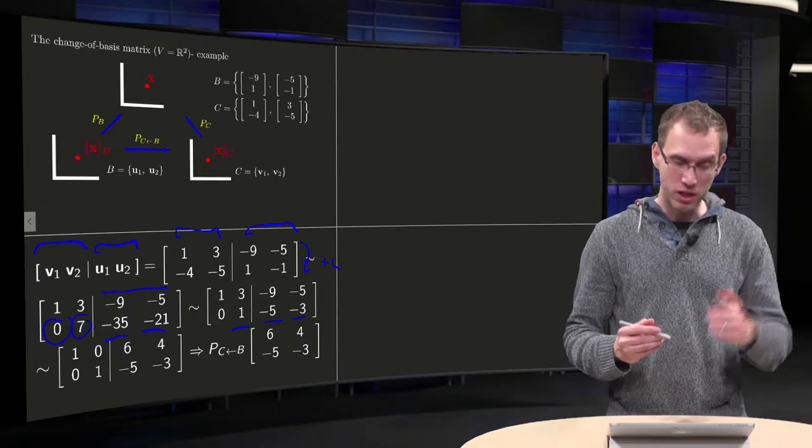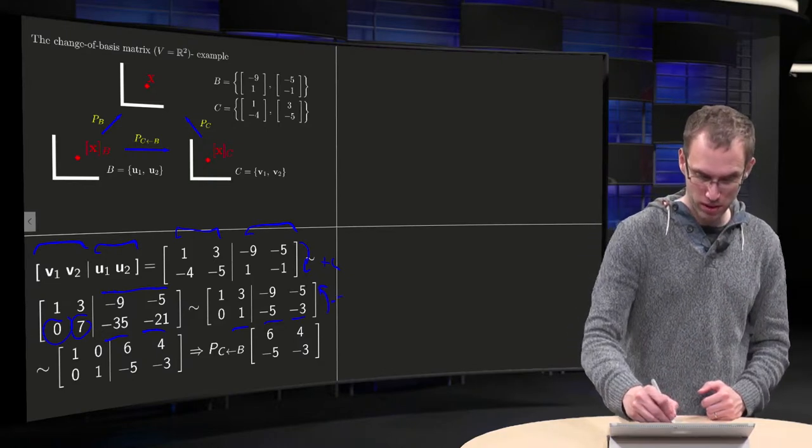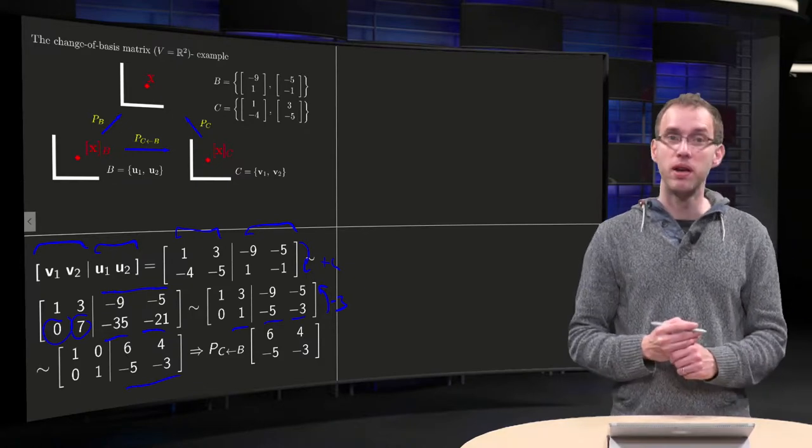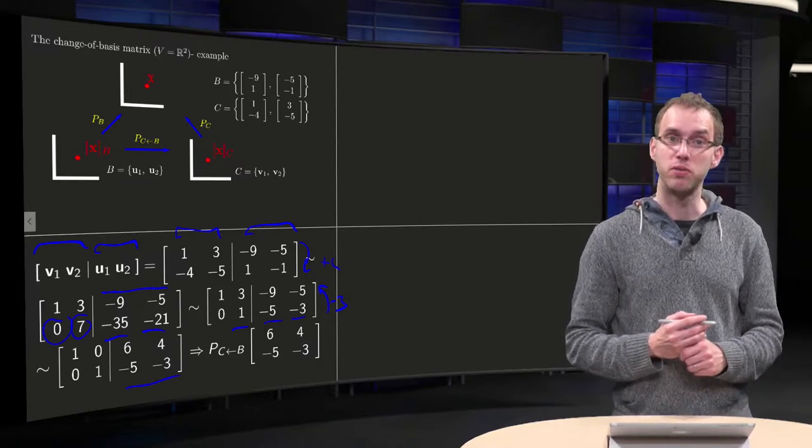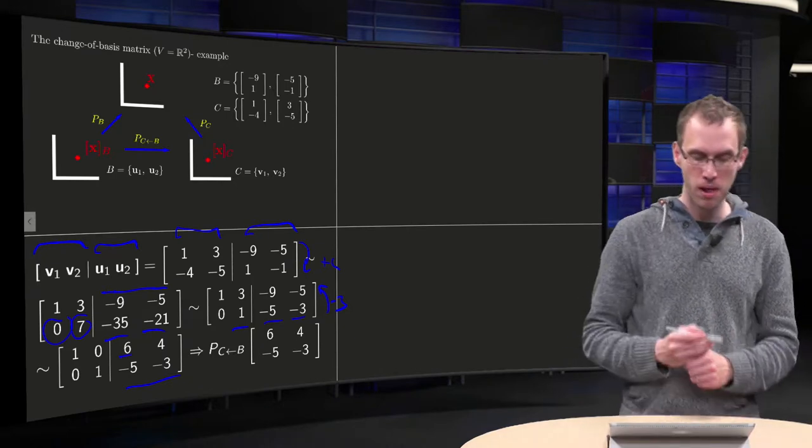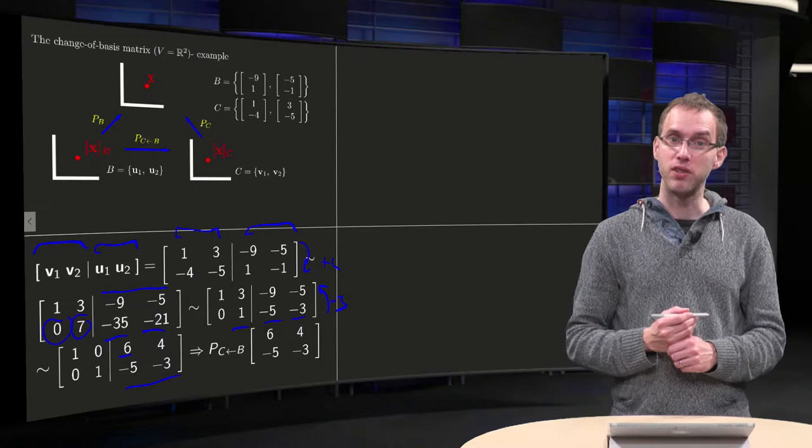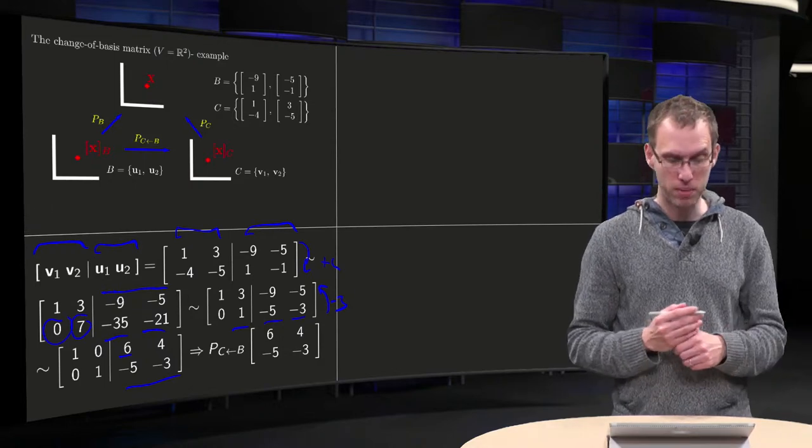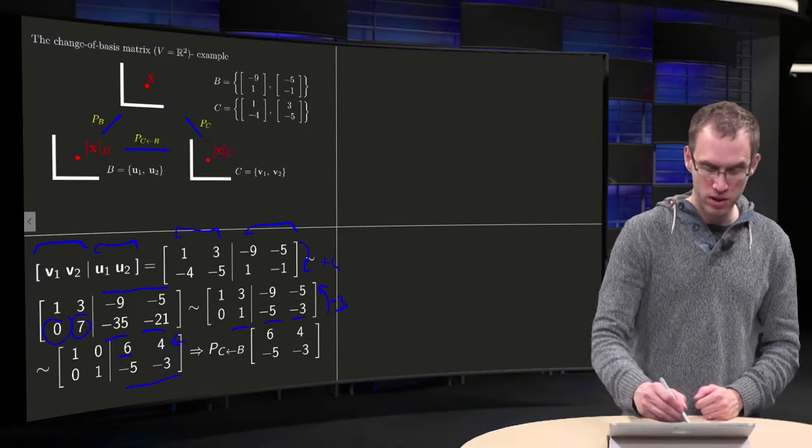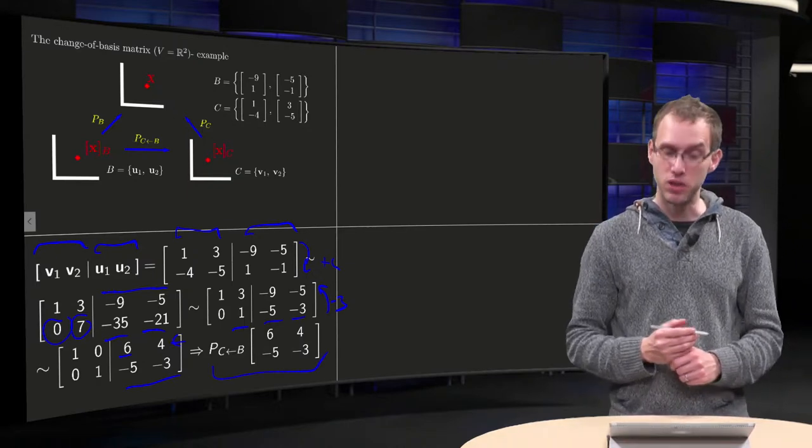And then, almost that identity matrix, we subtract it 3 times over here. So this row remains the same, 3 times minus 5 equals minus 15, subtract 15 minus 9 equals 6. And 3 times minus 3 equals minus 9, subtract 9 minus 5 equals 4. So, there we have our matrix P from B to C.